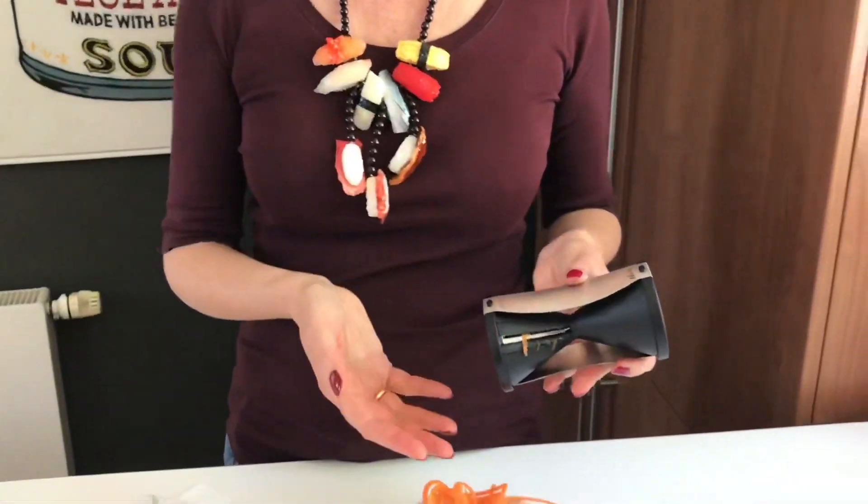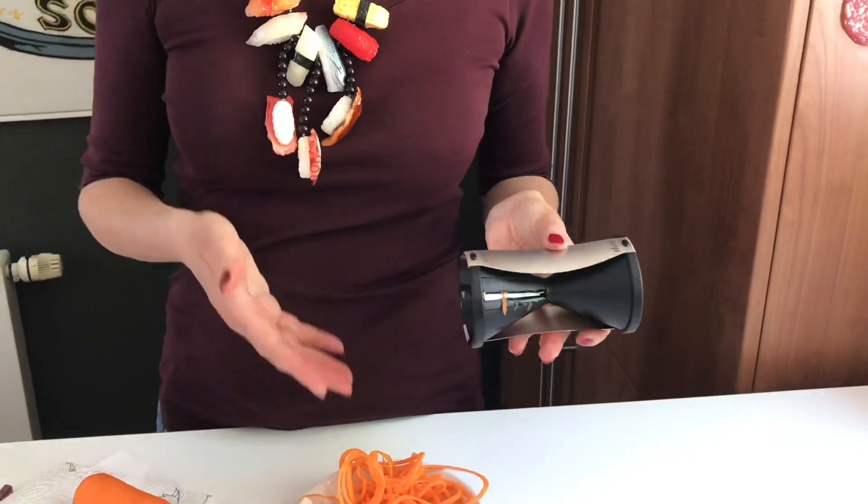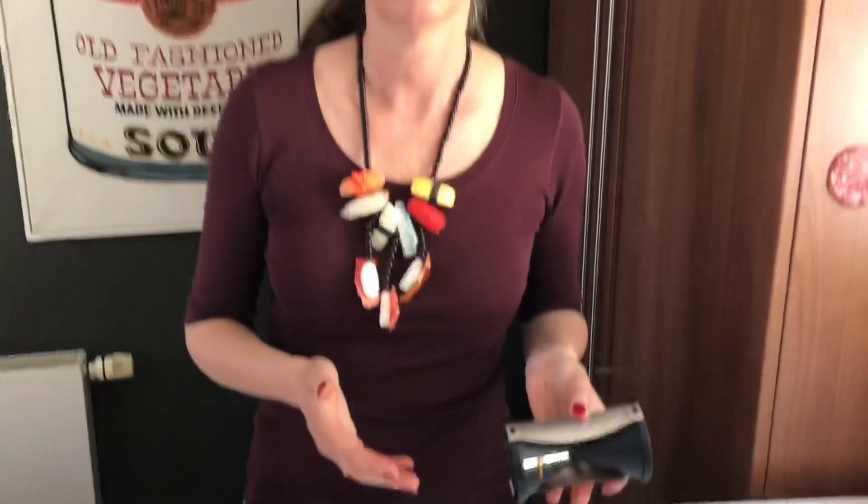So sometimes you have a thing that is not very obvious what you do with that and then you need an explanation. The perfect way to explain something is using a relative clause. For example, I want to describe that and I say it's a gadget which you use to cut carrots. And that explains this little gadget or this little machine. And I will explain to you now how relative clauses work.